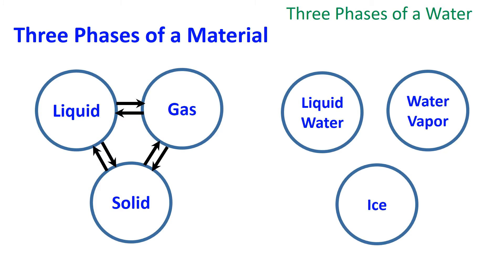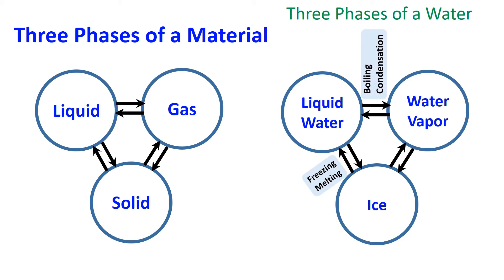Consider water. Solid water, that is ice, can transform to liquid water, and liquid water to water vapor, and water vapor can also be transformed into ice. These transformation processes are freezing and melting, boiling and condensation, and sublimation and deposition. In this video we are going to understand the freezing process.